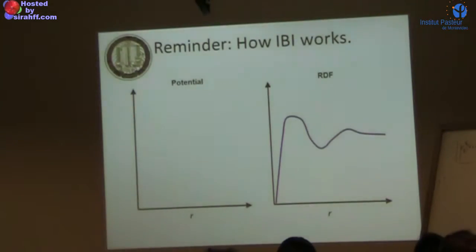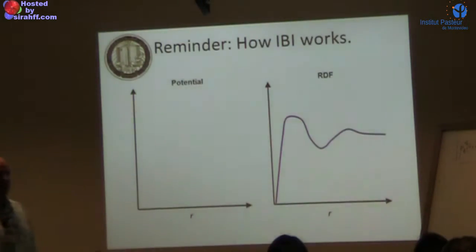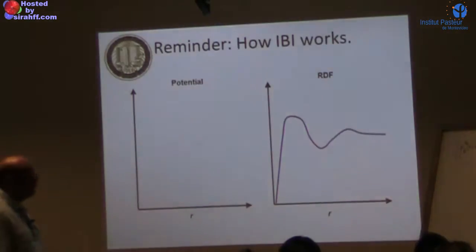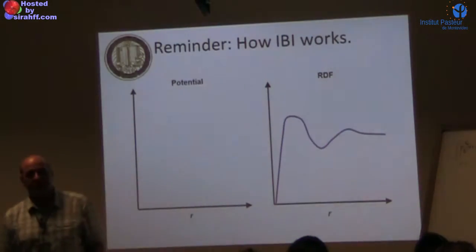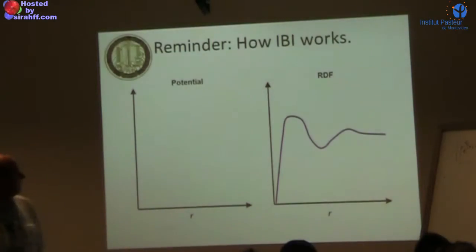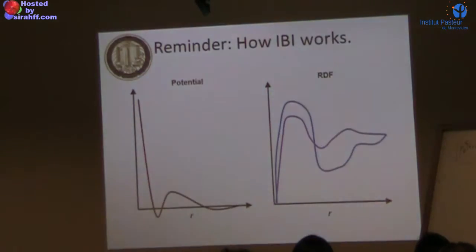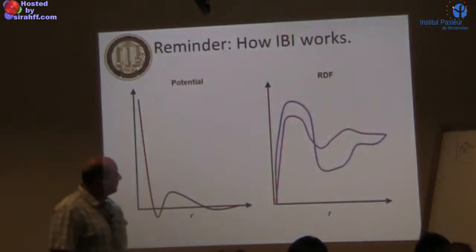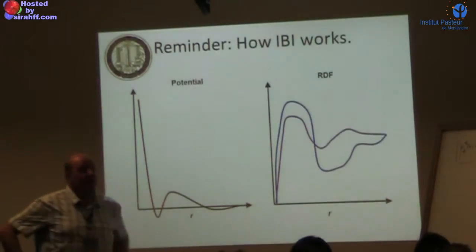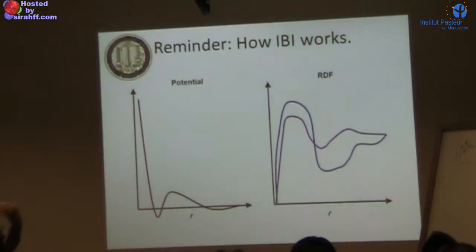Just a reminder from yesterday's slide: for non-bonded interactions, we have an atomistic radial distribution function mapped onto the coarse-grained level, which serves as our target. We calculate the potential based on this RDF using the IBI or Boltzmann inversion approach, and get an initial potential.